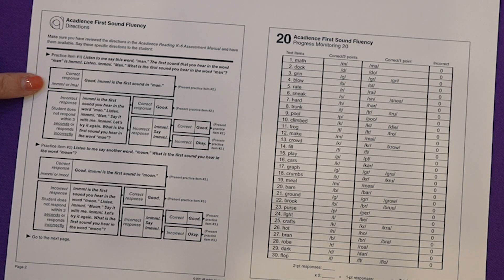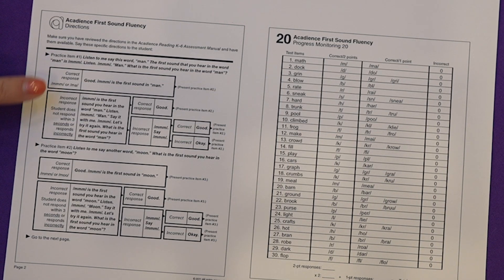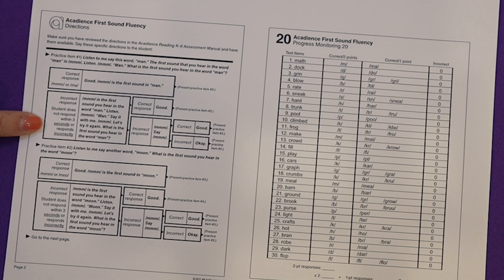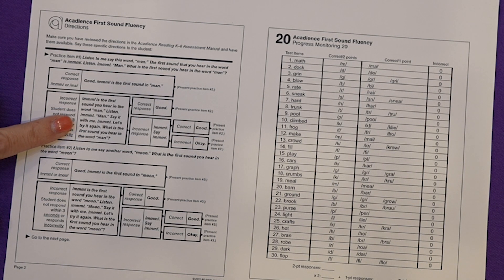If the student says mm, good — mm is the first sound in man. If they do not give the correct sound, or they do not respond within three seconds, you say: mm is the first sound you hear in the word man.